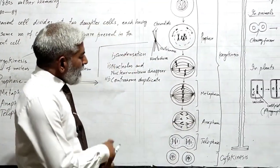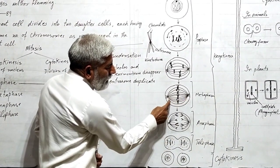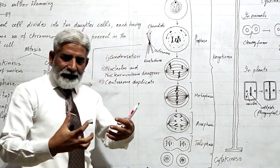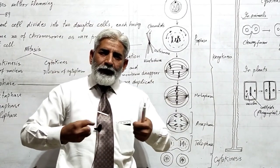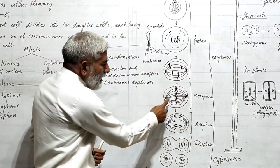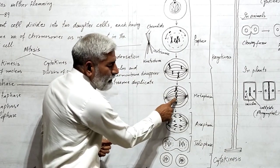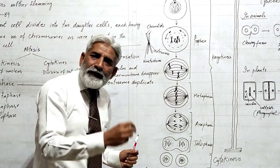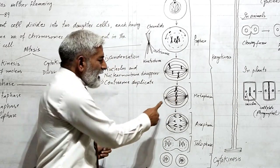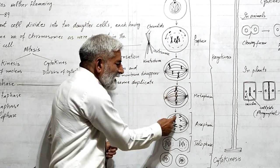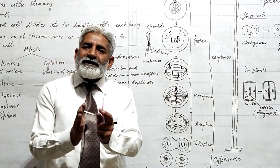In anaphase, these spindle fibers shrink and contract, and ultimately the centromere of the chromosome divides. And the two chromatids separate.